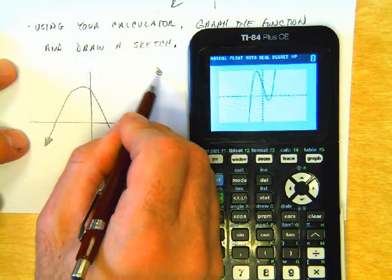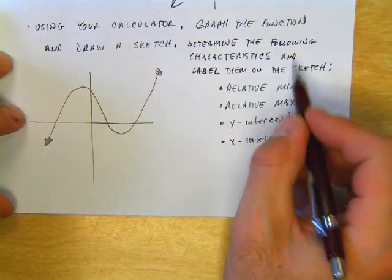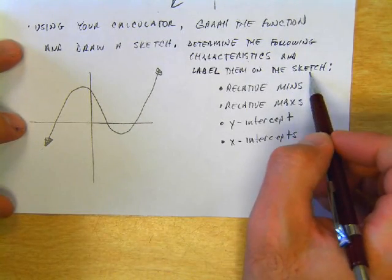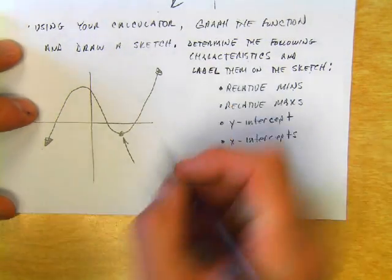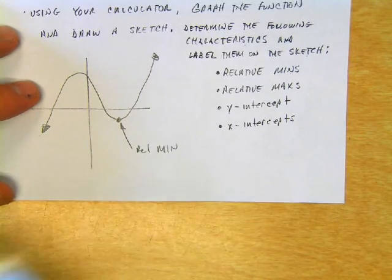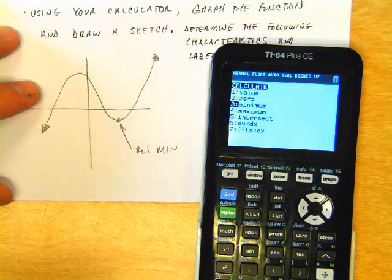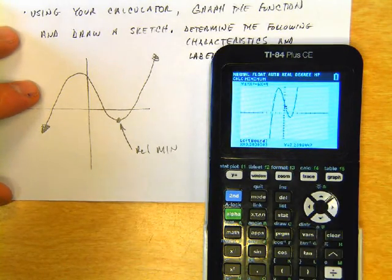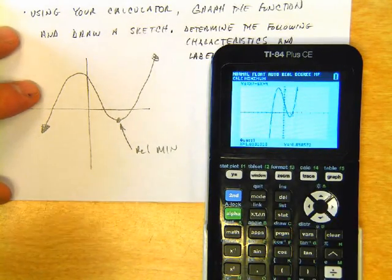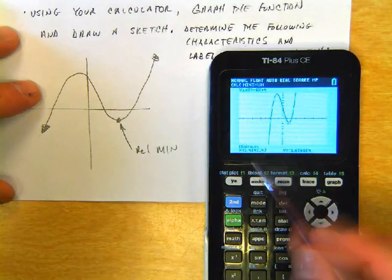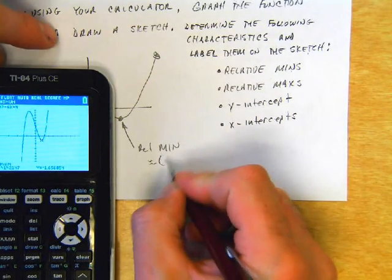The first thing to do: determine the following characteristics and label them on the sketch. The relative min—I see a min right there. I'll label it. Now let's determine what it is. Second, Trace to go to the calculate menu, number 3 minimum. We need to find a left boundary and a right boundary, then guess between them. The min is approximately (1.41, -1.66).